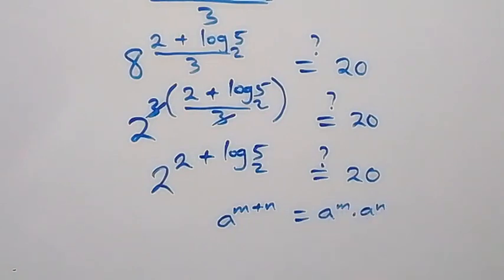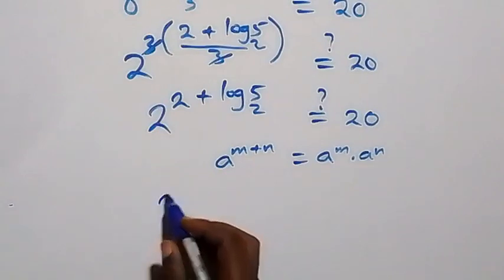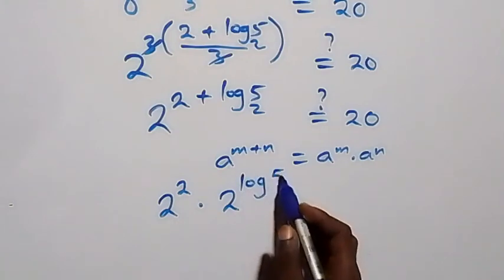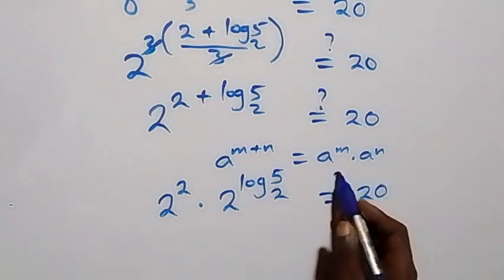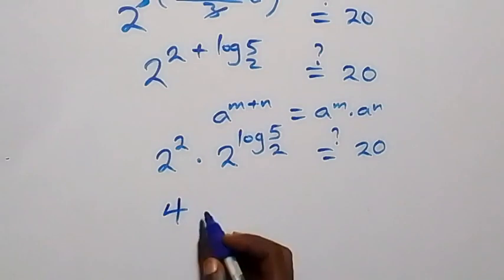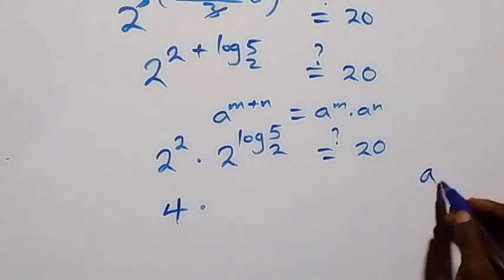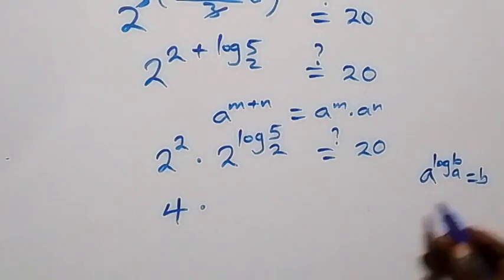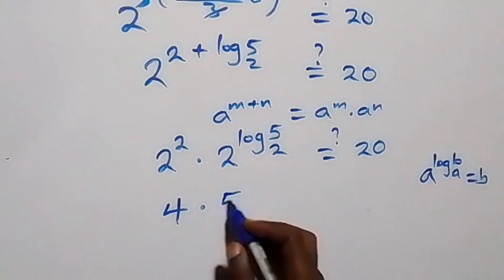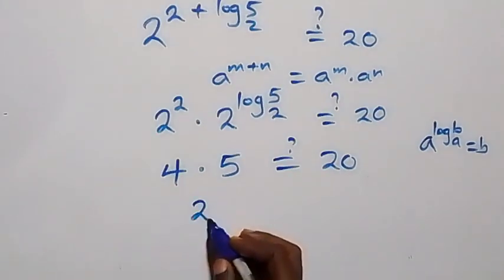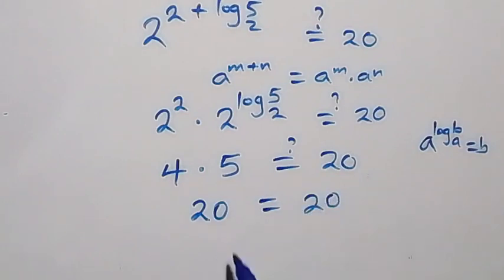Using the rule a raised to power m times a raised to power n, this becomes 2 raised to power 2 times 2 raised to power log base 2 of 5, which should equal 20. Now 2 squared is 4, and from the identity a raised to power log base a of b equals b, we have 2 raised to power log base 2 of 5 equals 5. So 4 times 5 equals 20, which confirms the result.